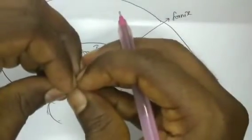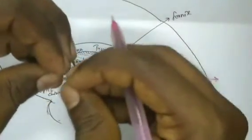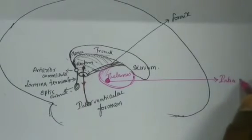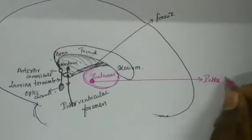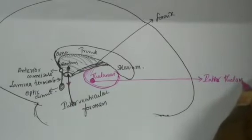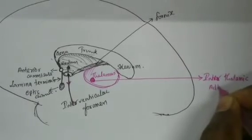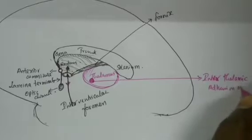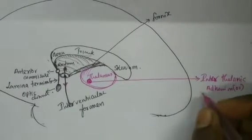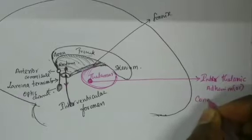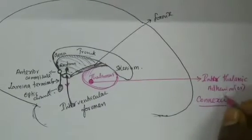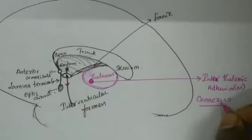The two thalami are attached in the midline by means of an adhesion called the interthalamic adhesion, also known as the interthalamic connexus.